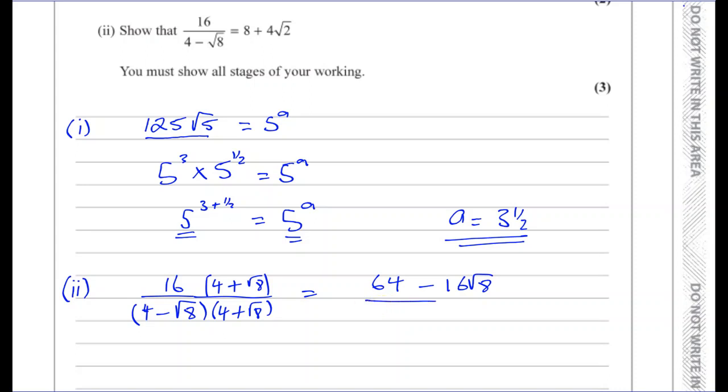So 16 times four is 64 and 16 times root eight, leave it at that for now, divided by when you multiply this, you get four times four, which is 16 and you'll have four times root eight and minus four times root eight, which will disappear. That was the whole point to get rid of the root and then minus root eight times plus root eight, which is minus eight.